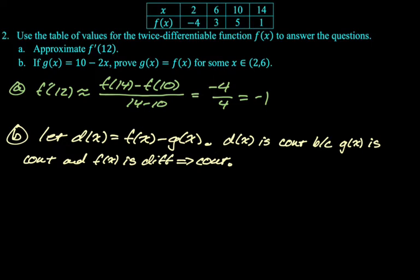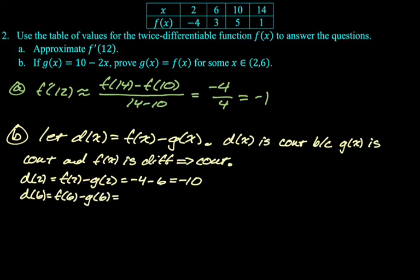All right, so now we know that d of x is continuous. I want to use the intermediate value theorem, I need to know d of 2, and I need to know d of 6. d of 2 is going to be f of 2 minus g of 2. f of 2 is negative 4 from the table, g of 2 is 6 if you plug it in. So we get negative 4 minus 6, which is negative 10. d of 6 is f of 6 minus g of 6. f of 6 from the table is 3, g of 6 is negative 2. So we have 3 minus negative 2, which is going to be 5.